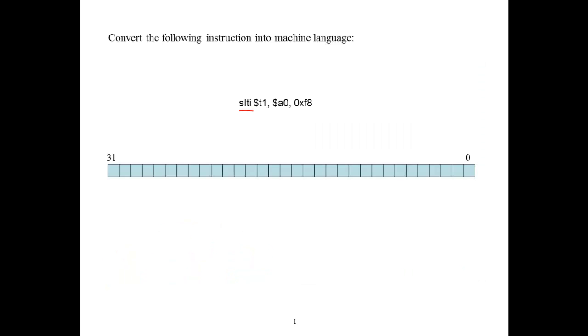If we go back to our instruction, the first 6 bits are going to be the opcode. The next 5 bits are going to be RS. The next 5 after that are RT, and the final 16 are the immediate.